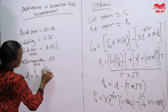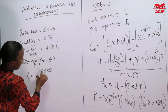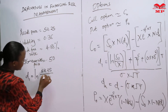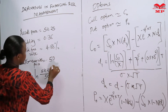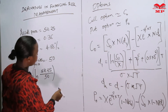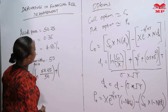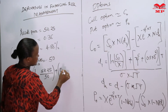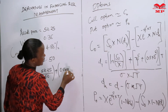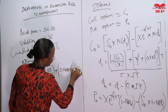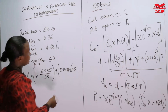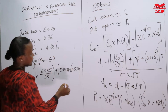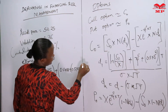In our example we have the LN of our asset price 52.25 divided by our exercise price 50, then we are adding our continuously compounded risk-free rate converted to decimal which is 0.0488, plus in brackets 0.5 times our volatility 0.35 squared, times time 0.75.